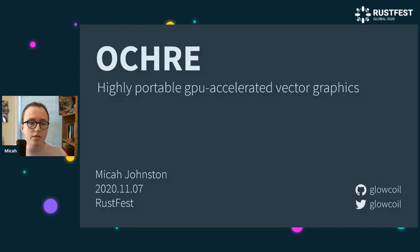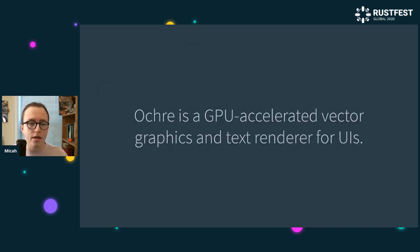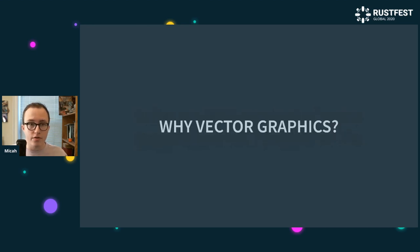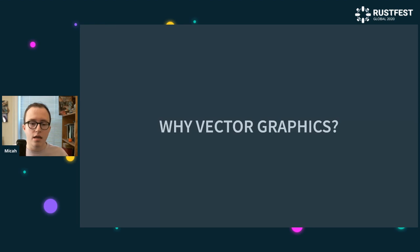The primary use case I've intended Ochre for is UI rendering. So first I'm going to try to answer the question: why am I making a vector graphics renderer in the first place? I would make the claim that vector graphics is by far the dominant type of representation for graphical content in user interfaces today.